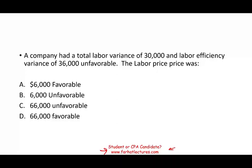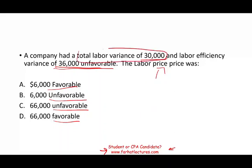A company had a total labor variance of $30,000 favorable and a labor efficiency variance of $36,000 unfavorable. The question asks: what was the labor price variance? The choices are favorable $6,000, unfavorable $6,000, unfavorable $66,000, and favorable $66,000. The person knew the amount but not whether it was favorable or unfavorable. The total labor variance is composed of two sub-variances: the efficiency variance and the price variance.